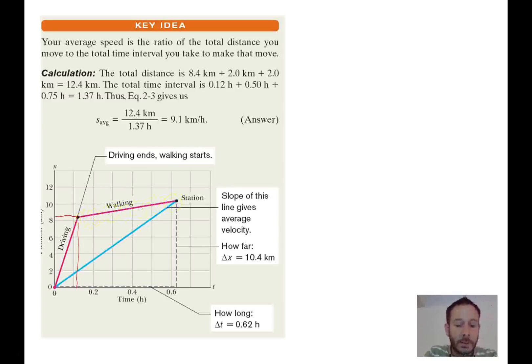Now the second going across here, that's going to be our walking time. And so we know that she only went about 2 kilometers. And she ended up taking about half an hour to do that. All right. So if we draw a line from the first point all the way to the second point and take the slope of that, that's going to give us our average velocity.